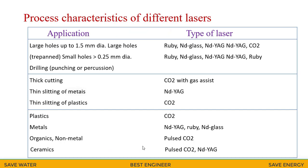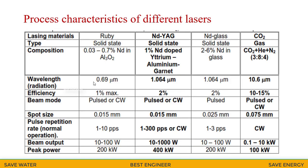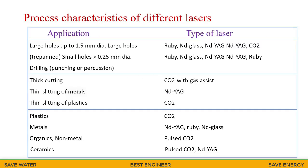Let me see the application and type of lasers. For large holes up to 1.5 mm, we can go for the ruby, neodymium glass, or neodymium YAG, or carbon dioxide lasers. For drilling, punching operations, we can go for the ruby, neodymium glass lasers. For example, thick sheet cutting, we can go for the carbon dioxide lasers.